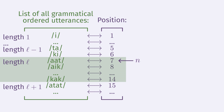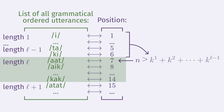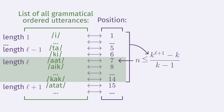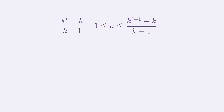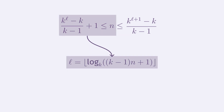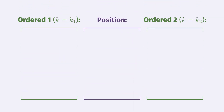Since utterances are sorted in increasing length, if the Nth utterance has length L, then N must be greater than the number of utterances of length less than L, and cannot exceed the number of utterances of length L or less. To get the number of utterances of length less than L, we sum K¹ + K² + ... + K^(L−1), which is a geometric series equal to (K^L − K) / (K−1). Thus the lower bound of N is that expression plus 1, and the upper bound is (K^(L+1) − K) / (K−1). We can invert these bounds to find that the length L of the utterance at position N equals the floor of log base K of ((K−1)·N + 1).